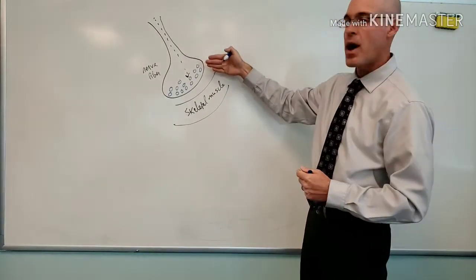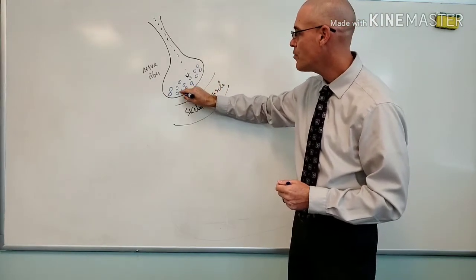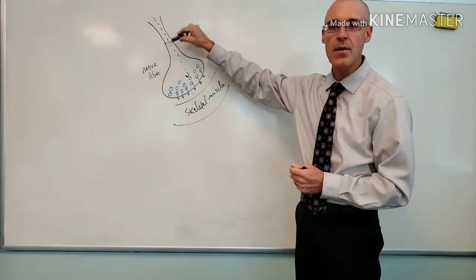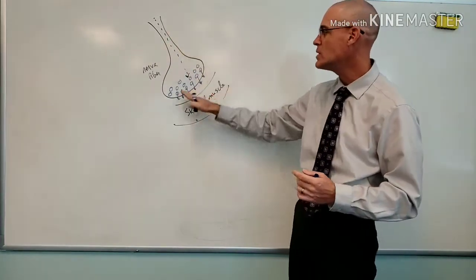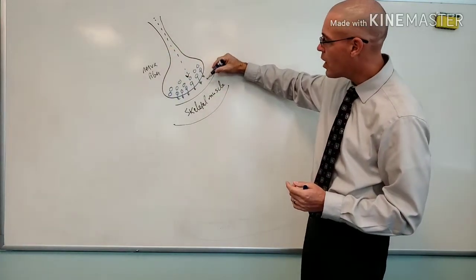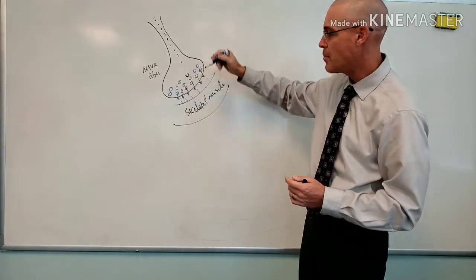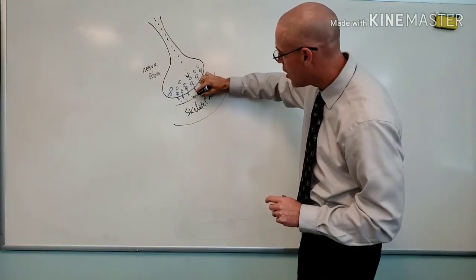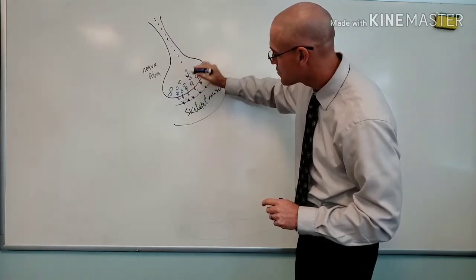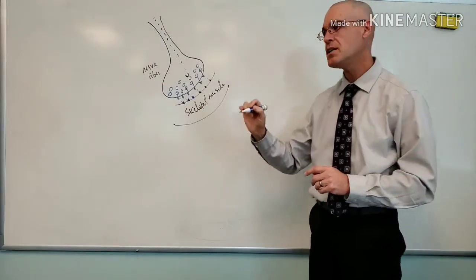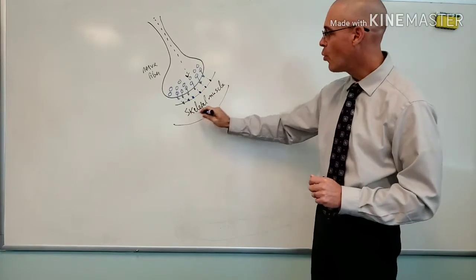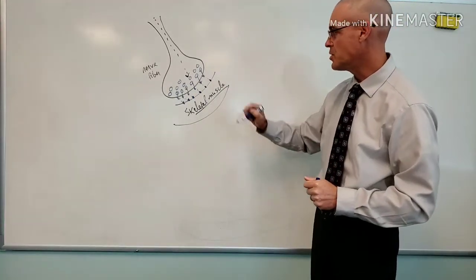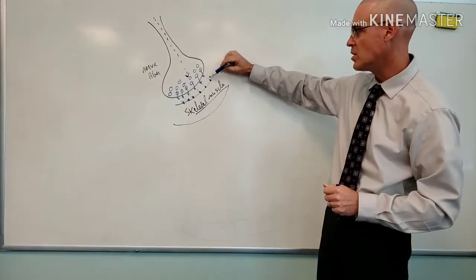Step one is the arrival of the nerve signal; step two is the release of the neurotransmitter from the vesicle. It leaves the vesicle and the nerve fiber via exocytosis, floats across the gap in the synapse — called the synaptic cleft — and binds to receptors on the skeletal muscle side. For skeletal muscle, that specific neurotransmitter is acetylcholine, which floats across the cleft and binds to those receptors.